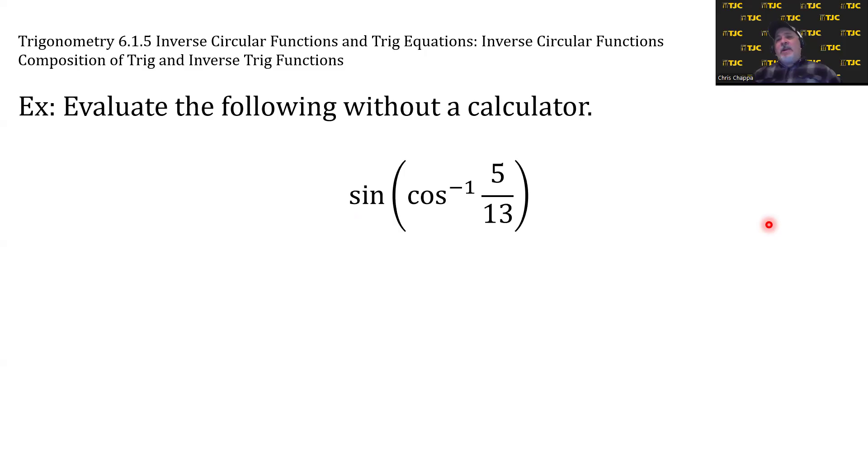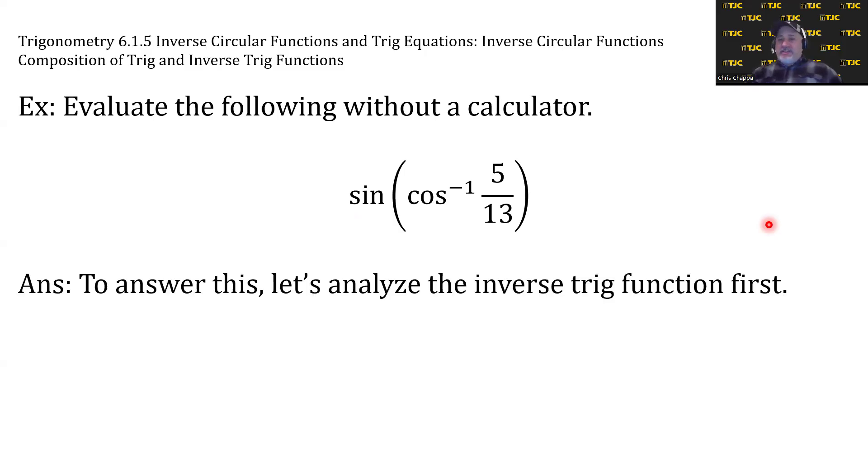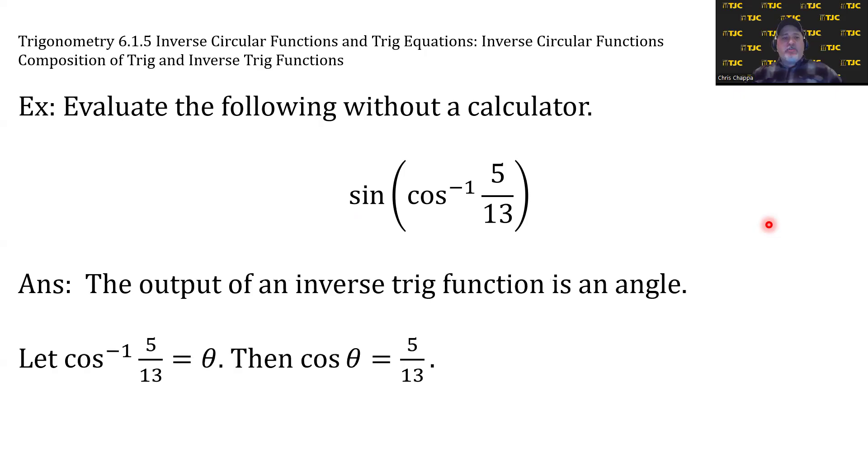I don't know the exact value, but I know that the answer to a cosine inverse problem represents an angle. Let's capitalize on that. Let's analyze the inverse trig function first. The output of an inverse trig function is an angle, so we're going to let cosine inverse of 5 thirteenths equal theta. This means that cosine of theta is equal to 5 thirteenths. Why is this important? What do we know about cosine? A lot.